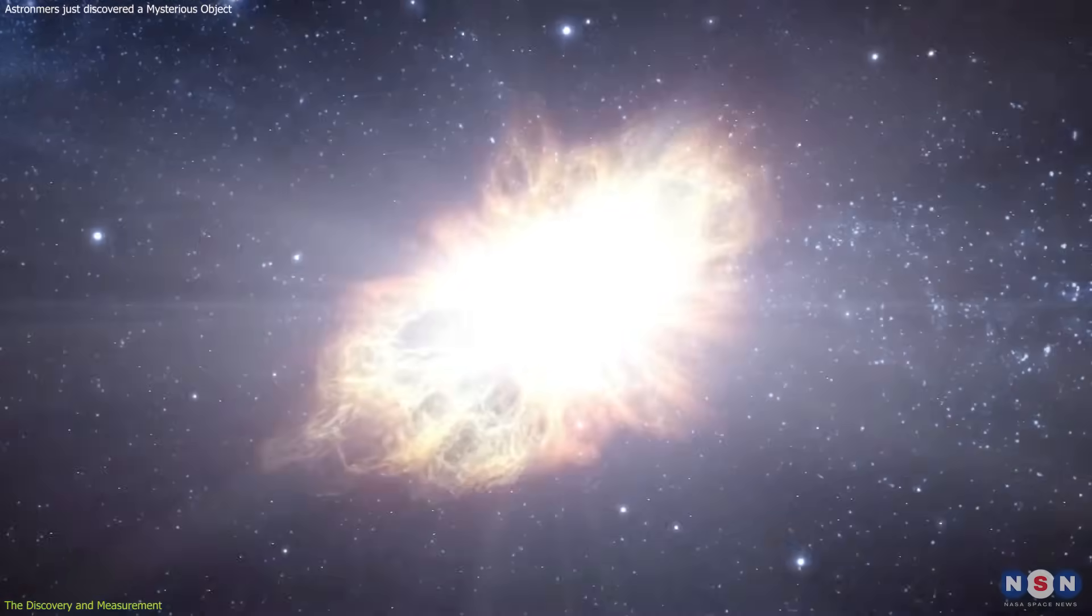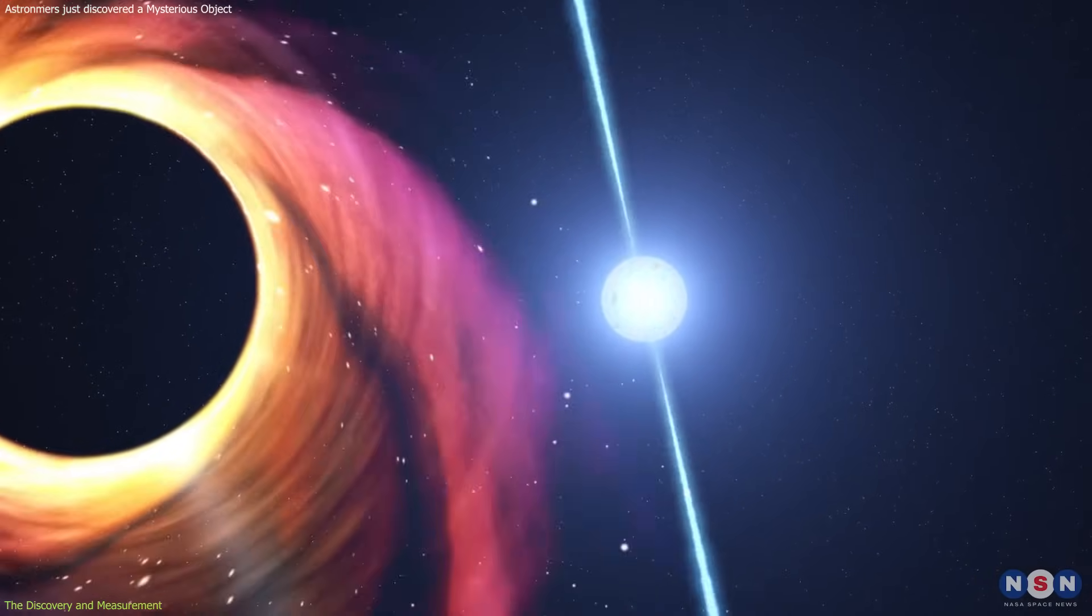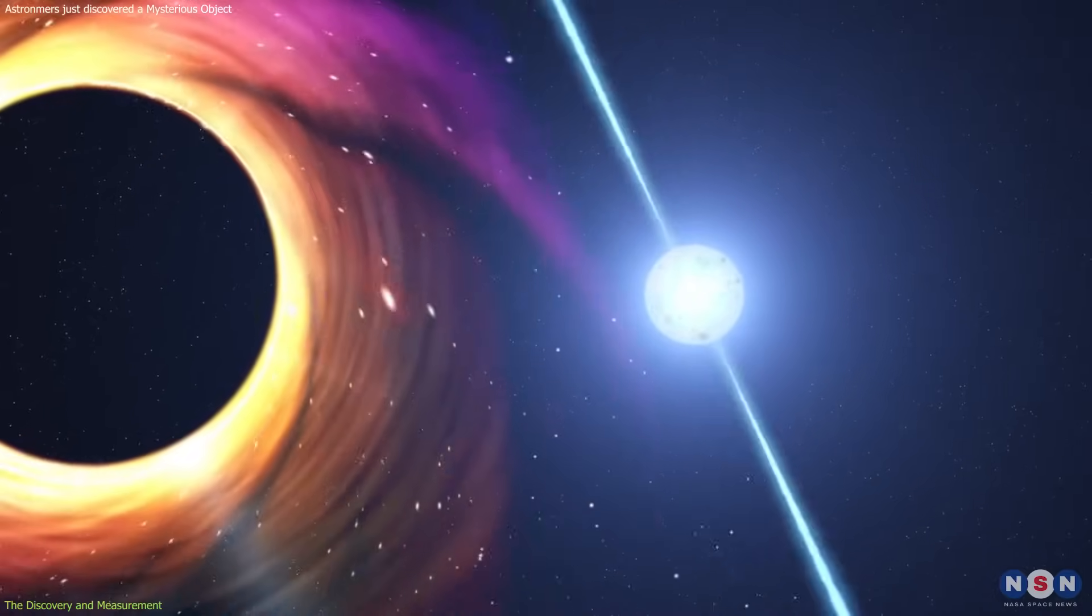This gap is thought to be a result of the different ways that massive stars die and collapse, depending on their initial mass and composition. But the exact mechanism and the boundary between neutron stars and black holes are still unclear and debated.